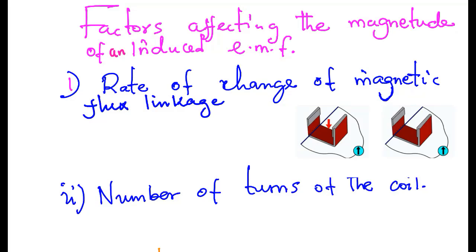Factors affecting the magnitude of an induced EMF. To demonstrate this, we need a conductor and a magnet. The conductor is attached to the galvanometer. The conductor is moved very fast, at a moderate speed, and very slowly. Then the observations are made on the galvanometer.